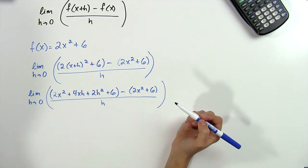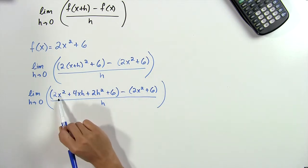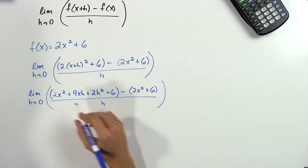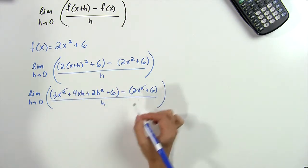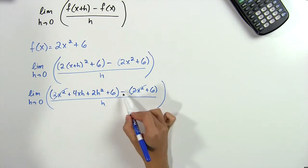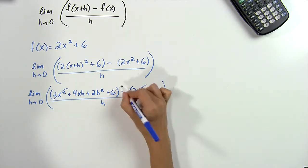Now this looks like a long mess, but a lot of these cancel out. We have 2x squared minus 2x squared, so both of those cancel, and then we have plus 6 and minus 6, so both of those cancel out.